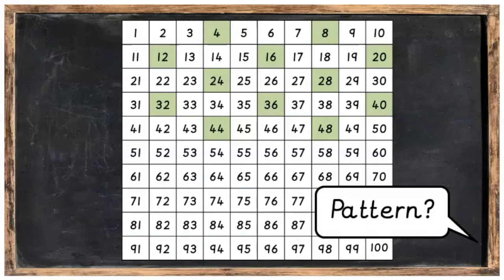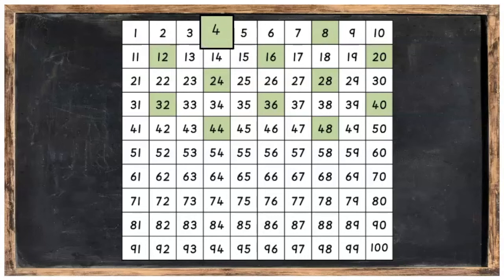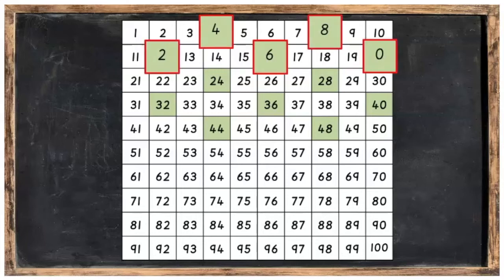Now, can you see a pattern with the numbers that we've landed on? You can probably see that the four, the eight, the twelve, the sixteen and the twenty, well they have the numbers four, eight, two, six and zero in them.